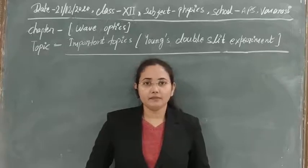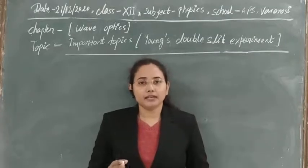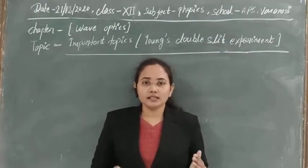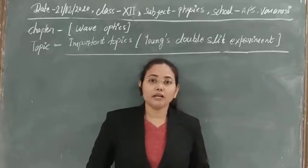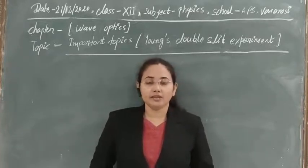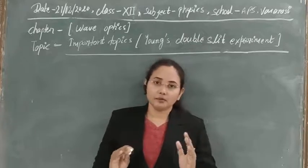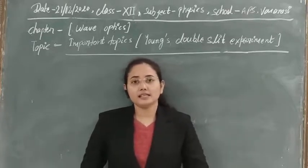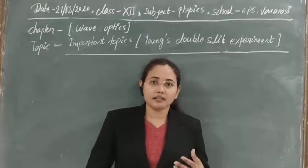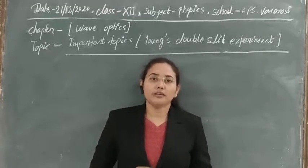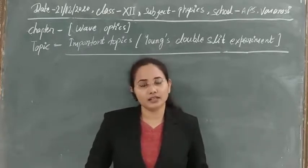We derived a formula for path difference in terms of wavelength — the conditions for maxima and minima. For maxima, the path difference is an even multiple of λ/2; for minima, it is an odd multiple of λ/2. Using this concept, Young performed an experiment to define and calculate the positions of maxima and minima on a screen due to interference of two coherent light sources.